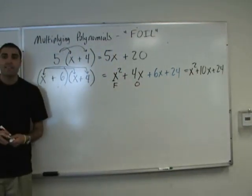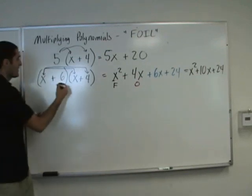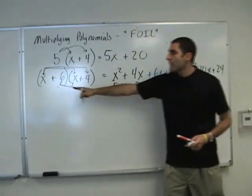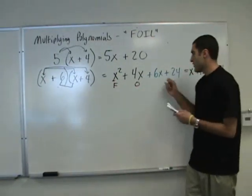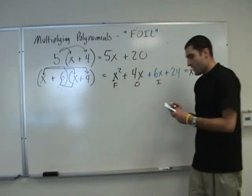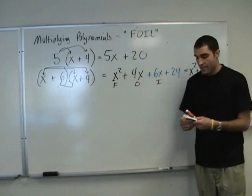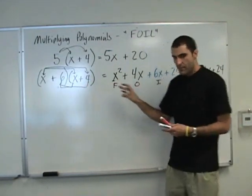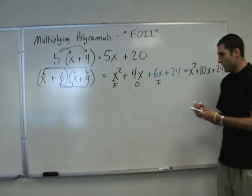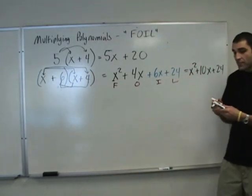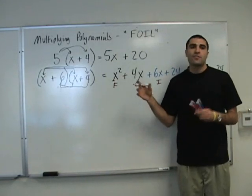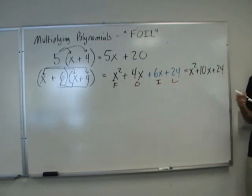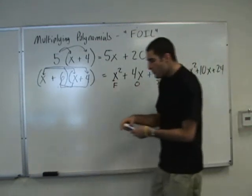Anyone know what I is? Inner. Those are the inside terms — notice 6 and x are both on the inside, so multiply those two, that's I. And finally, L stands for Last. 6 and 4 are both the last terms in these two sequences, and that gives us 24. Here's a big hint: the O and the I usually will combine — they combine here to make 10x.